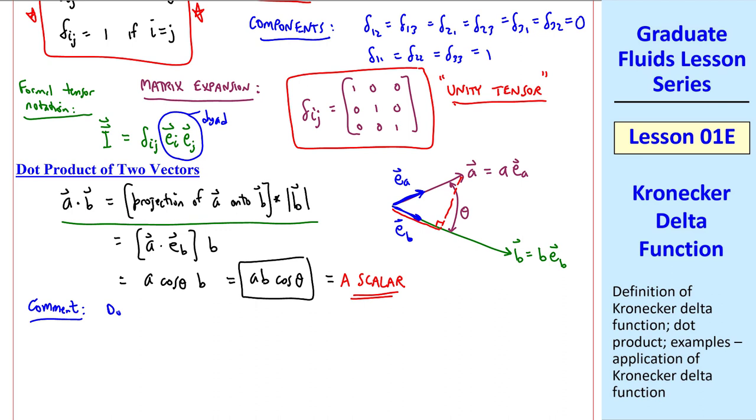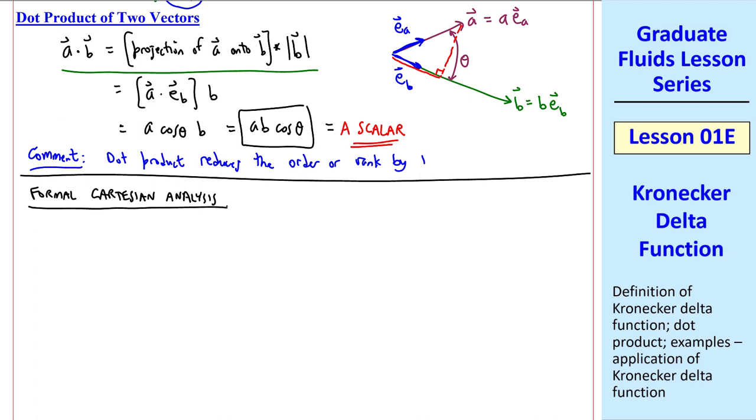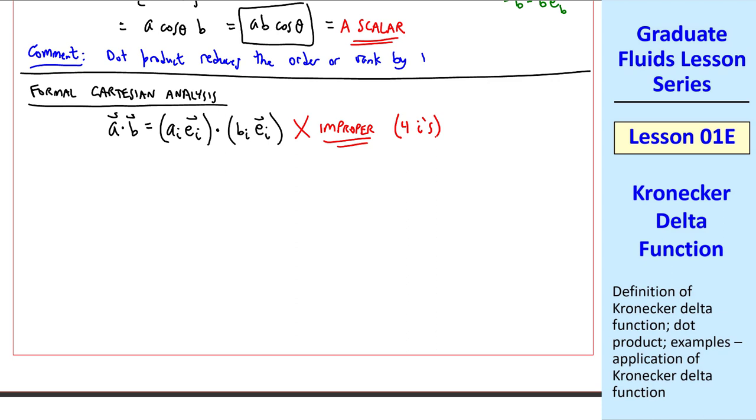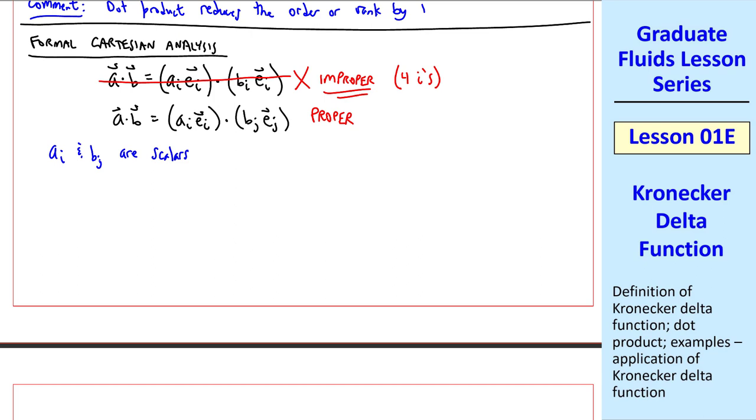So we write this as a vector dotted with eb, and the magnitude of vector b is just b itself. Vector a dot eb is a cosine theta, so this is a cosine theta b, or a b cosine theta, as you should remember from your math class, which is a scalar. Just a comment. The dot product reduces the order or rank by one. We started off with vectors, and now we have a scalar. Now let's do what I call formal Cartesian analysis. Vector a is a i e i, and we dot with vector b, which is b i e i. But this is improper.